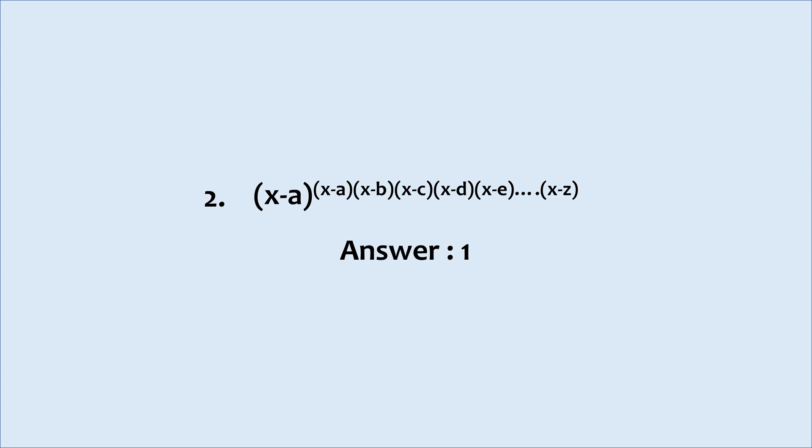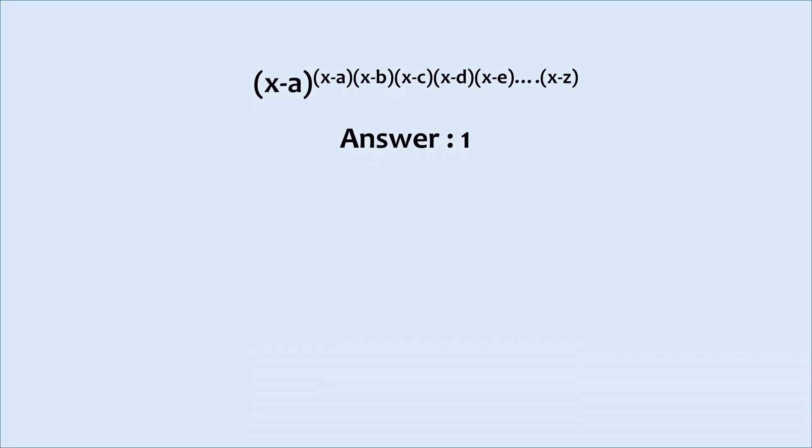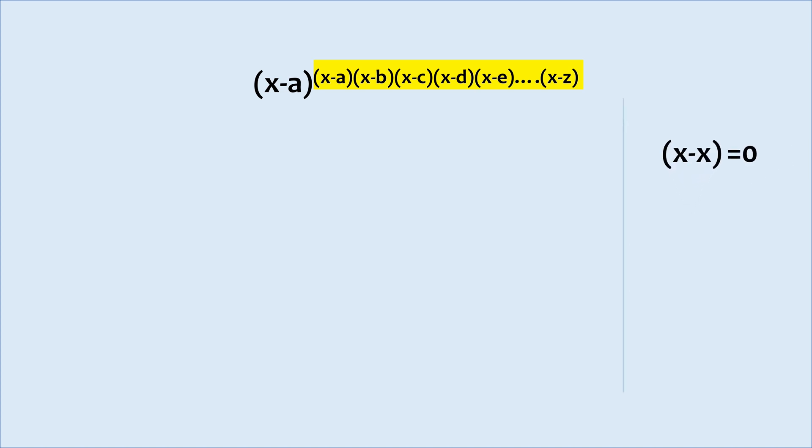Let's look at the term in the exponent. It says the pattern x-a, x-b, x-c, x-d continues to x-z. Let's not forget that this pattern also has a x-x contained in it which is 0.